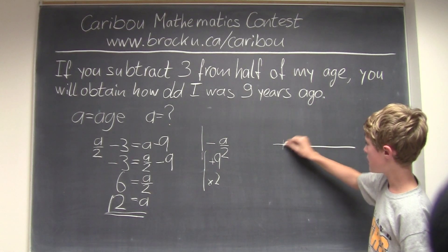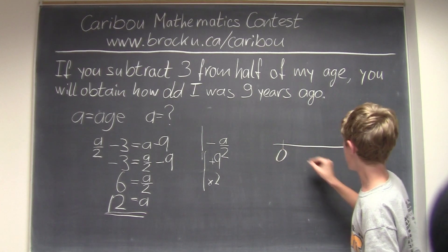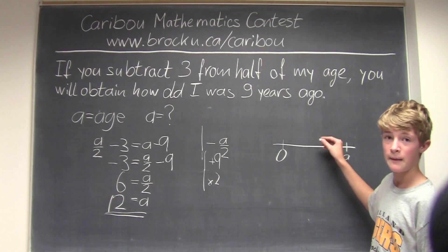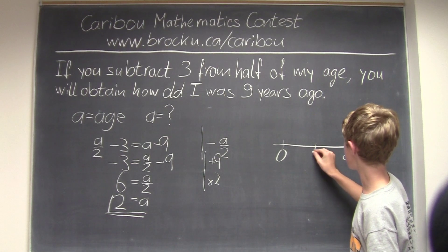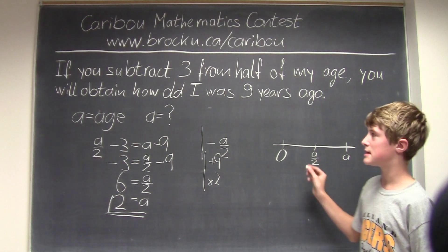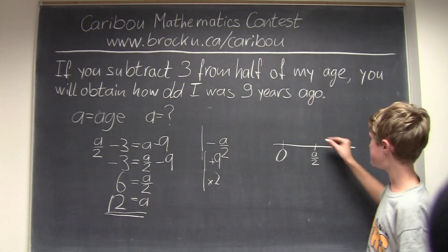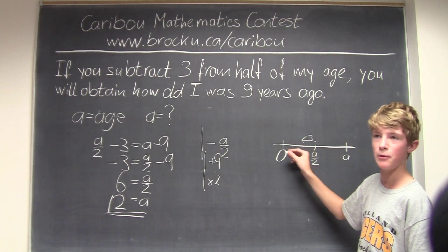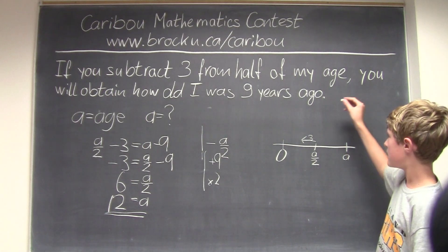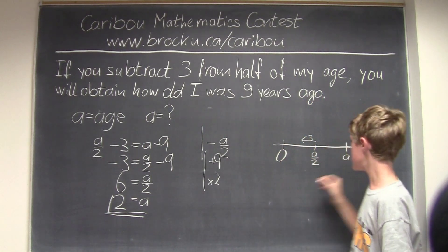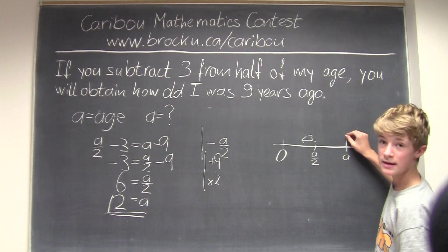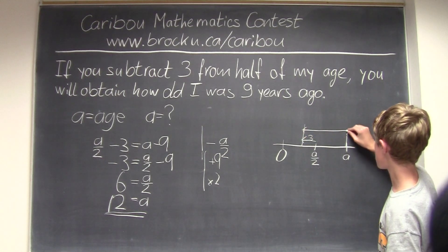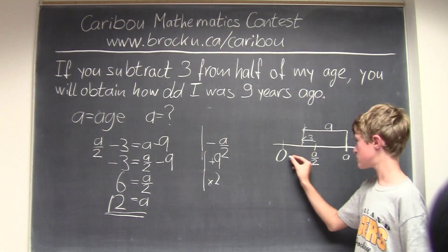Let's assume this is a timeline. Here I was born, which is 0, and here is my age. In the middle is my age divided by 2. Since it says subtract 3 from half of my age, I would be going this way — 3 steps closer to birth. And it says it is the same as how old I was 9 years ago, so it would be the age minus 9, which is also closer to birth.